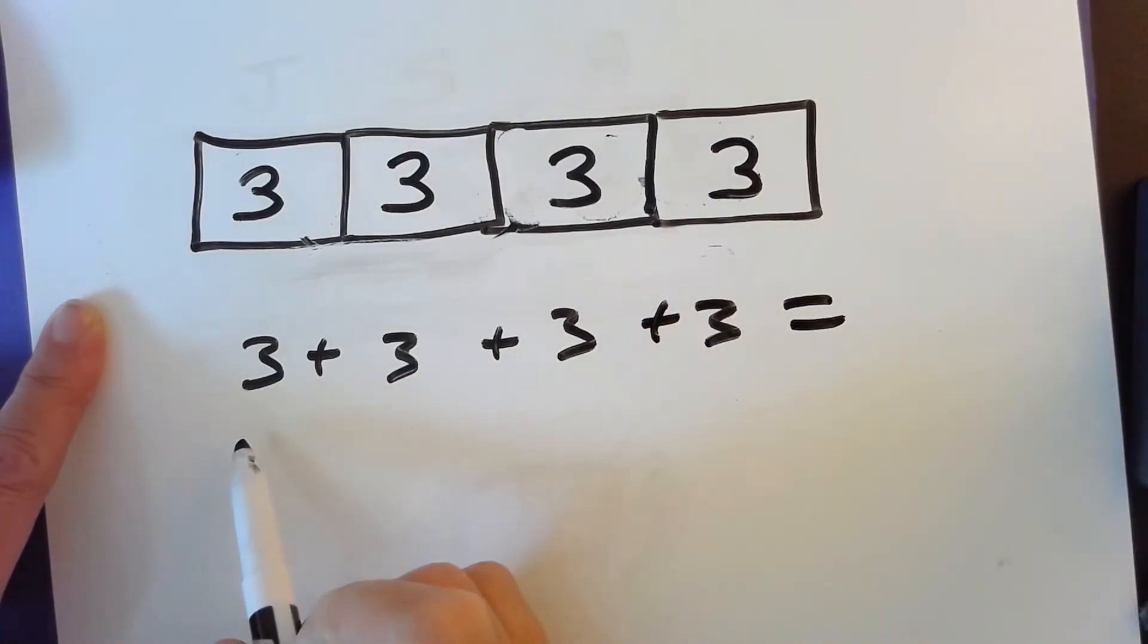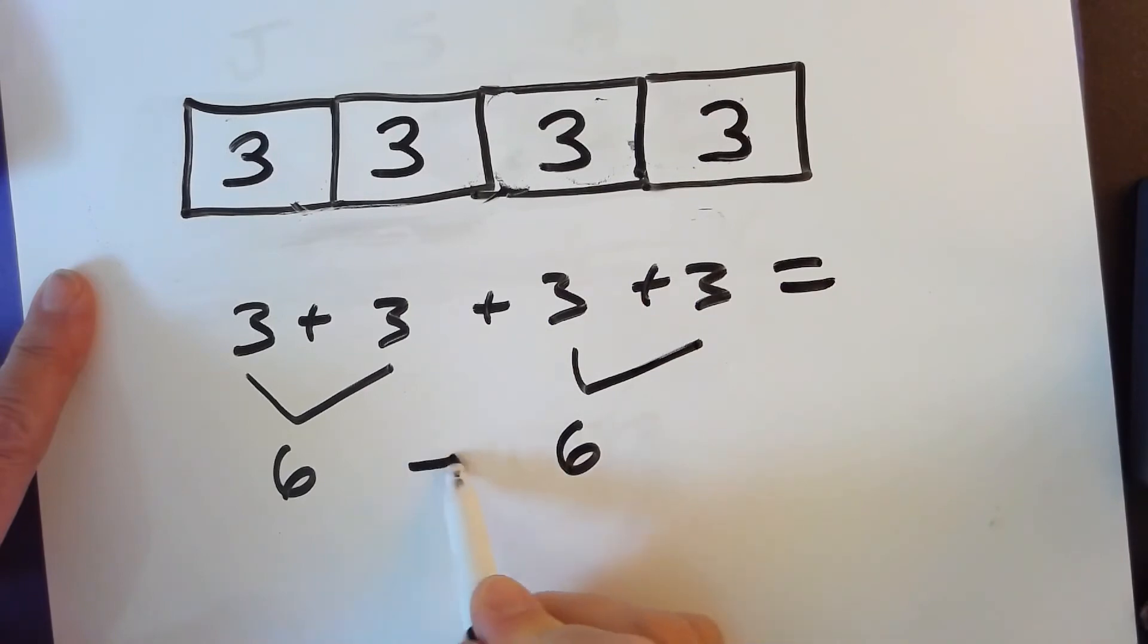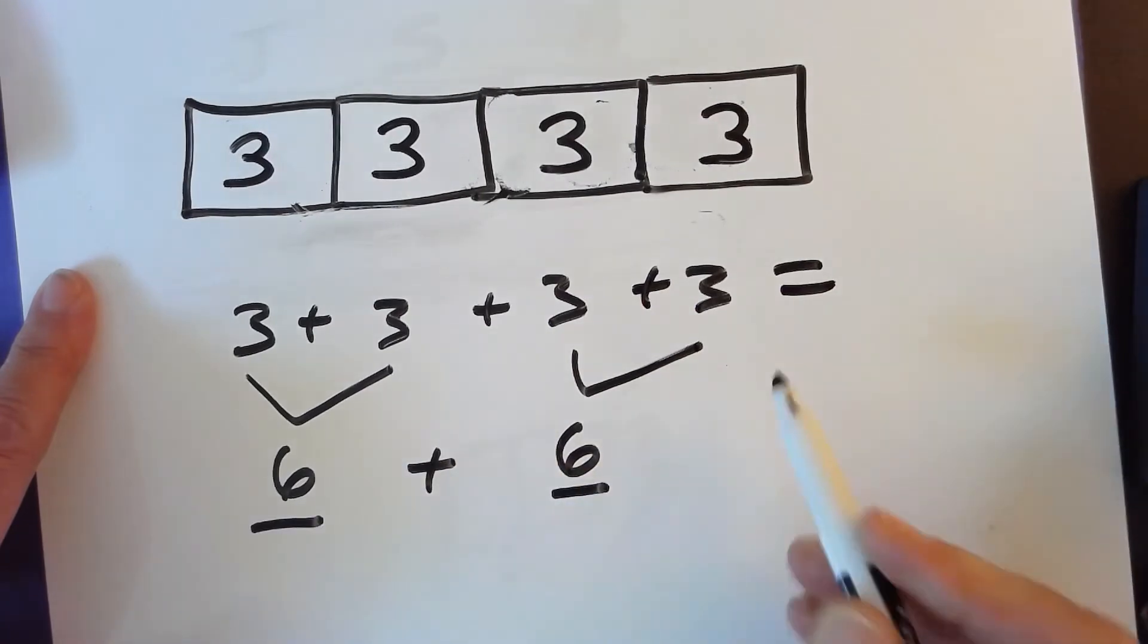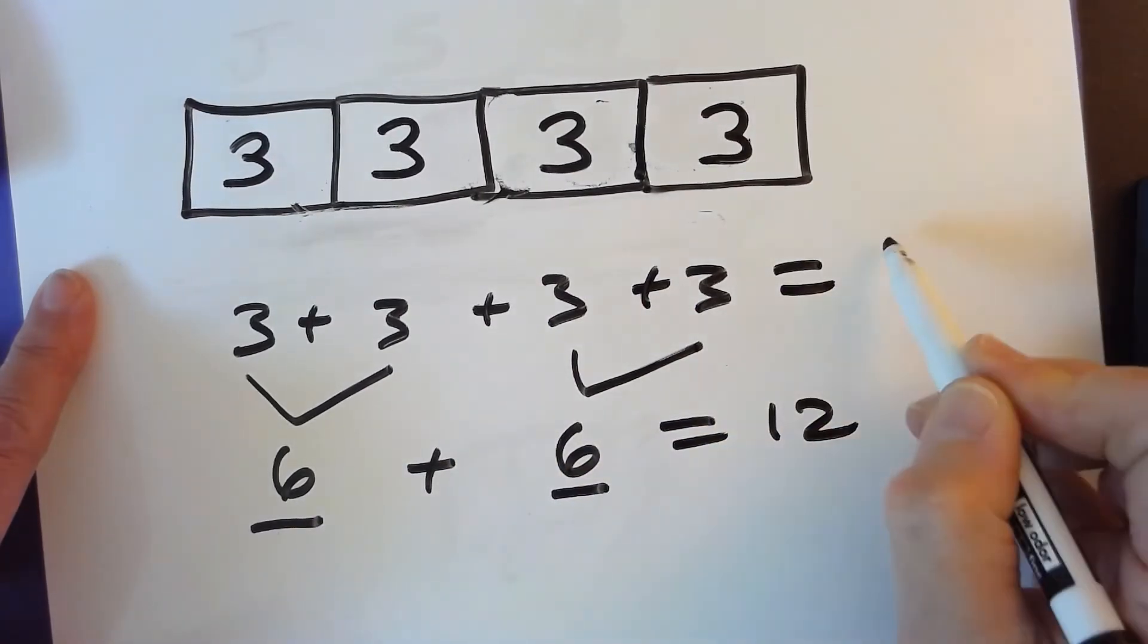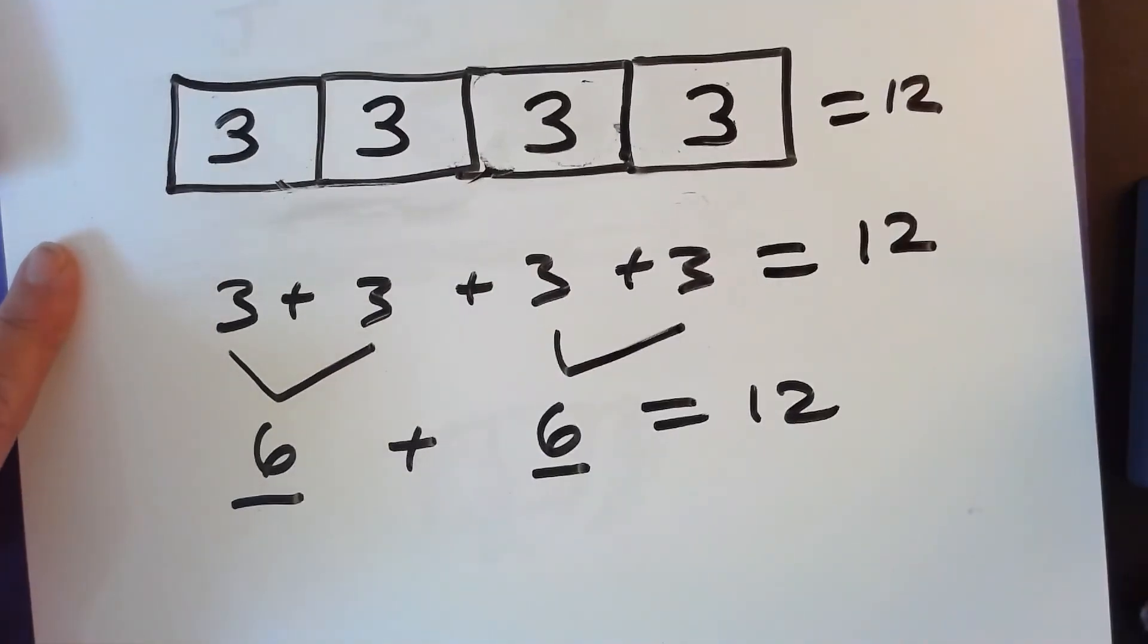We can skip count, or we can do doubles. Three plus three is six. Three plus three is six. So what is six plus six? It's 12. So that means the answer is 12. Nice job.